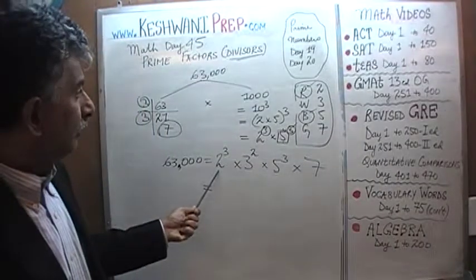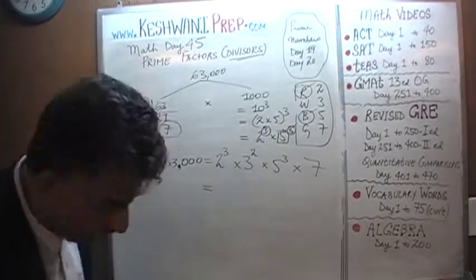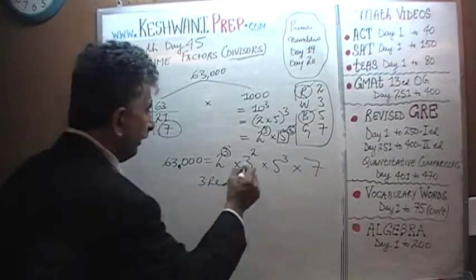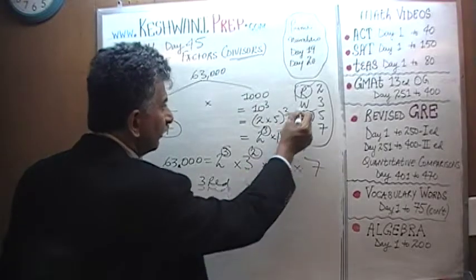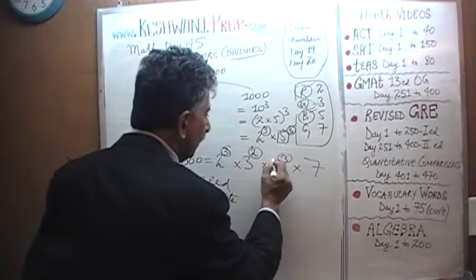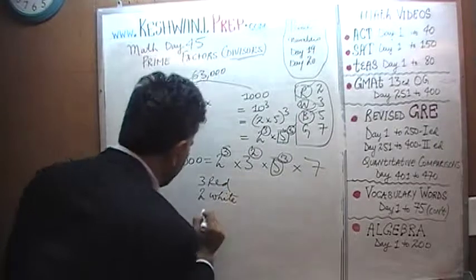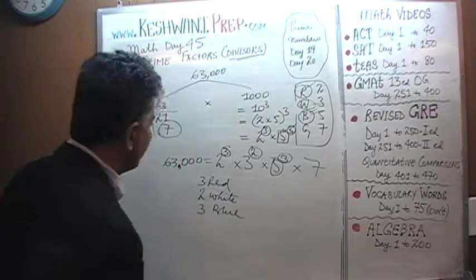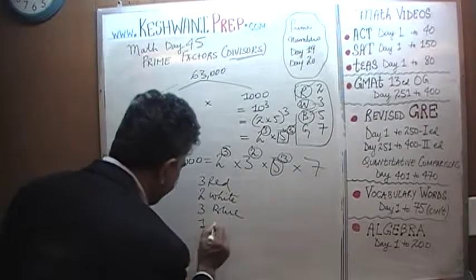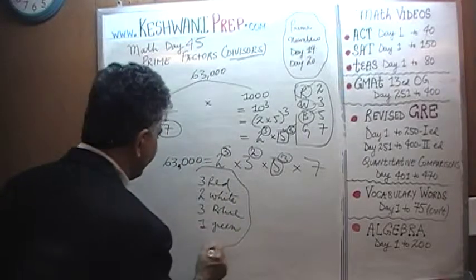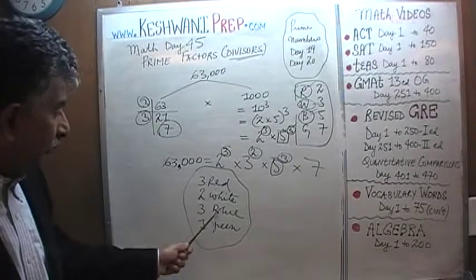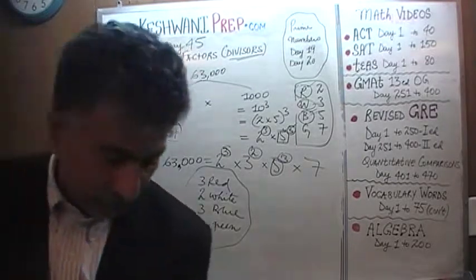Which marble had a point value of 2? That's red — so we have three red ones. We have two of the marbles that have a value of 3, the white ones — white has a value of 3, so we have 2 white. We must have 3 of the ones that have value of 5, and that was blue — we have 3 blue — which means we must have had one green. That's our answer: three red marbles, two white, three blue, and one green.